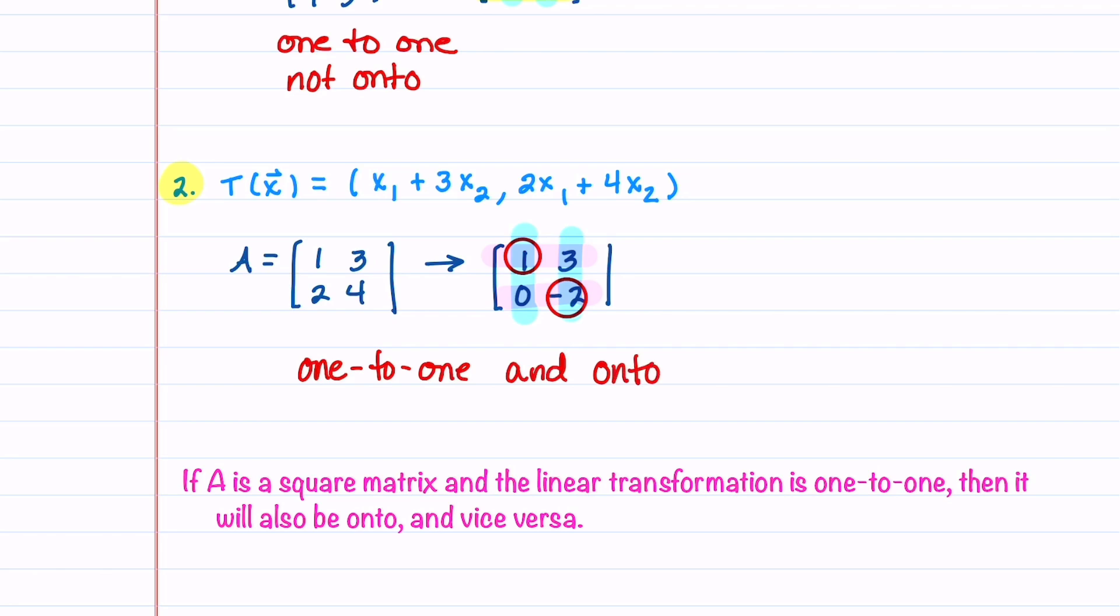Notice in this example that our matrix is a square matrix. In a square matrix, if we have a pivot in every column, we'll also have a pivot in every row, and vice versa. Because of this, if A is a square matrix, and the linear transformation is one-to-one, then it also will be onto, and vice versa.